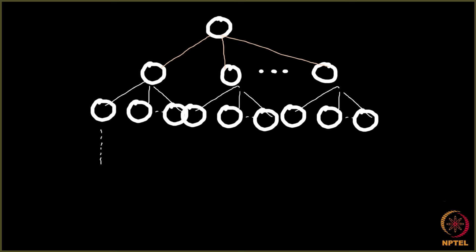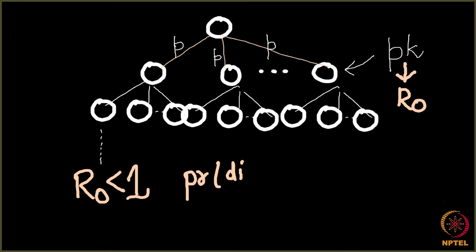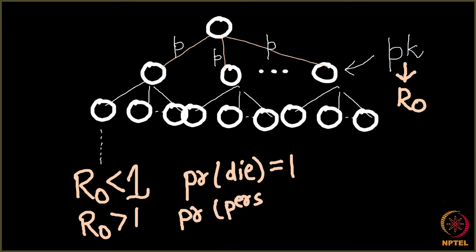This was our basic branching model. We looked at the number of expected people who get infected, which was given as p times k, where p is the probability that the disease gets transmitted across an edge. We called this number the basic reproductive number R0, and the claim was: if R0 is less than 1, then the probability that this disease dies equals 1. If R0 is greater than 1, then with a positive probability the disease persists in the network.